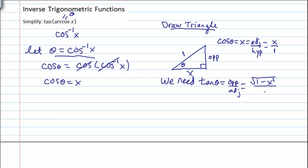And adjacent is just x on this triangle, so really we have solved the problem. So I'm just going to write the therefore statement: therefore tan of arccos x equals the square root of 1 minus x squared over x.